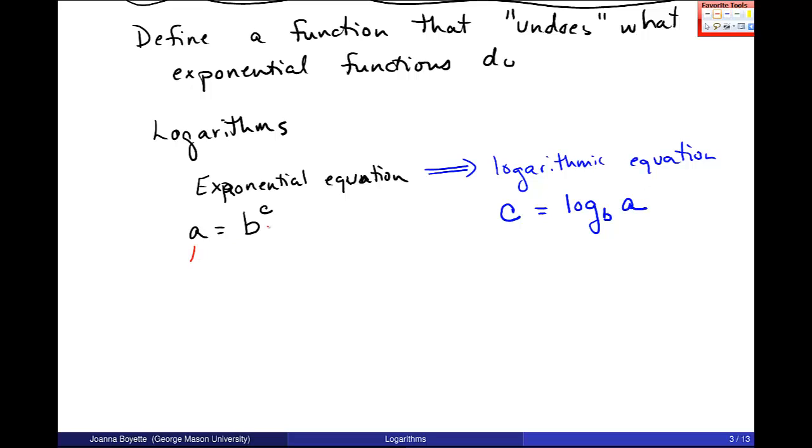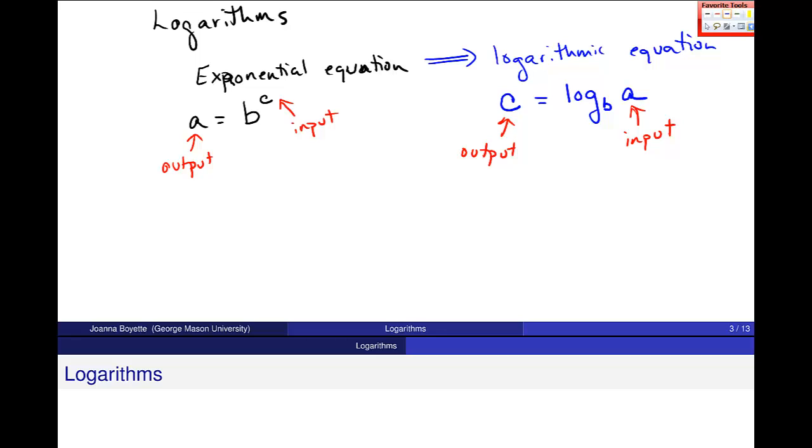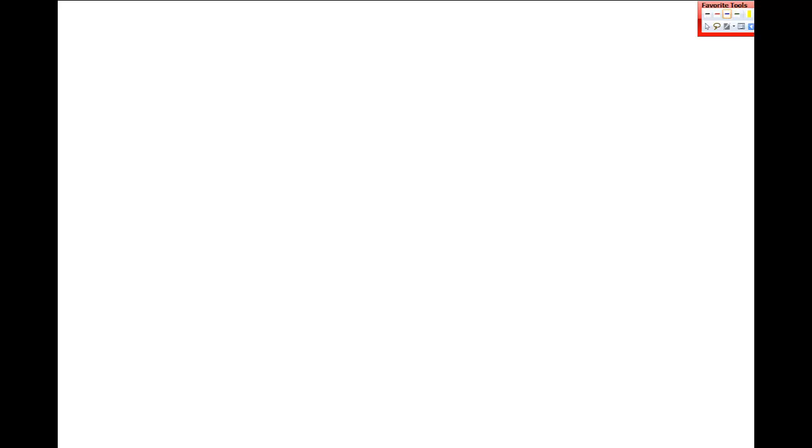Take a look here. This is the input. Now here it's the output of this log. Over here, a was the output, and now it gets switched to the input. This log functions like this exponent, right here. Let's just do an example of using this different notation so we can switch back and forth between these two forms of exponential and log equations.